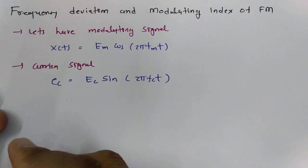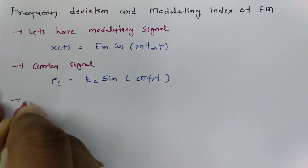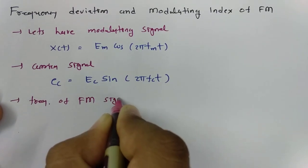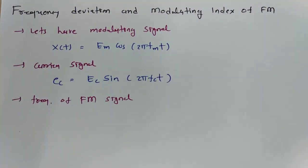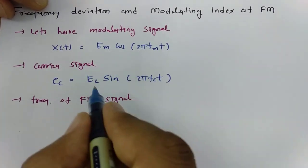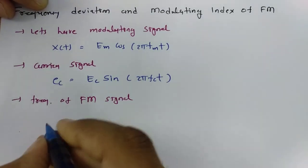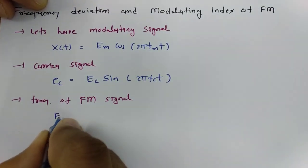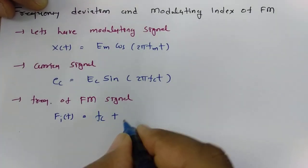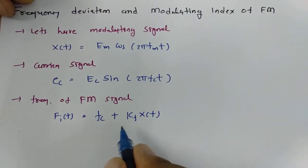When we talk about the frequency of the modulating signal and the modulated signal, the frequency of the FM wave varies with respect to Xt. So the frequency of the FM signal changes with respect to the carrier frequency Fc and with respect to Xt. The frequency of the FM signal is a time-varying function, denoted F(t), and is equal to Fc plus Kf·Xt, where Kf is the sensitivity of FM.